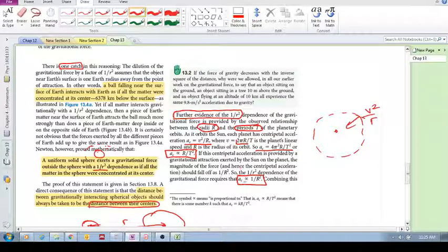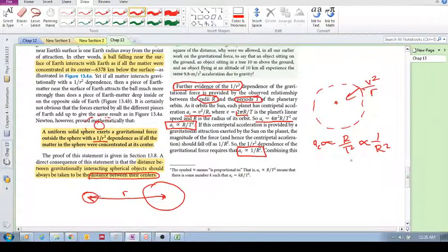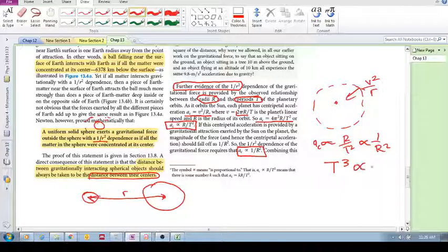Now if you put these two together, a_c is proportional to r over t squared, and it's proportional to 1 over r squared, and we rearrange this, we'll see that...